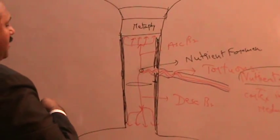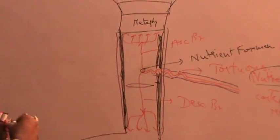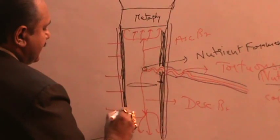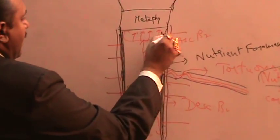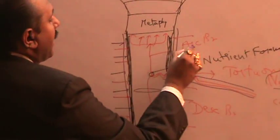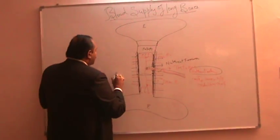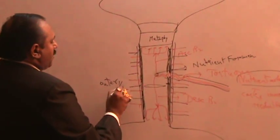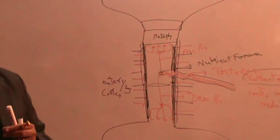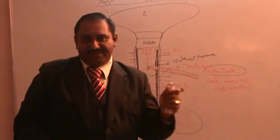The cortex is covered by a layer called the periosteum. The periosteum has lots of blood vessels — arteries and veins. These periosteal vessels are small in size but large in number. They supply the outer one-third of the cortex.